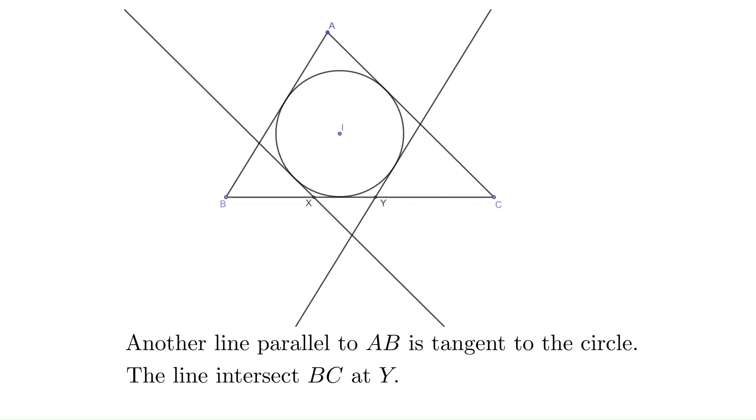Draw another line parallel to side AB and is tangent to the circle as well. The line intersects BC at point Y.